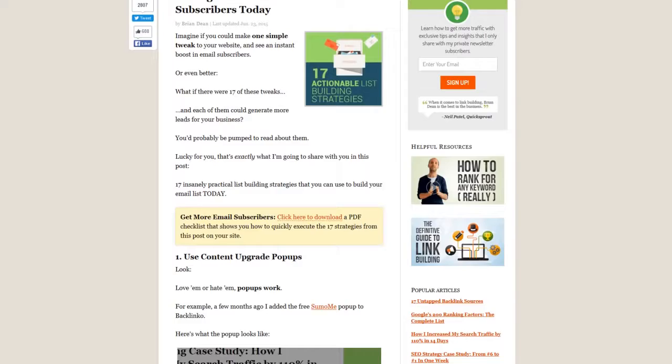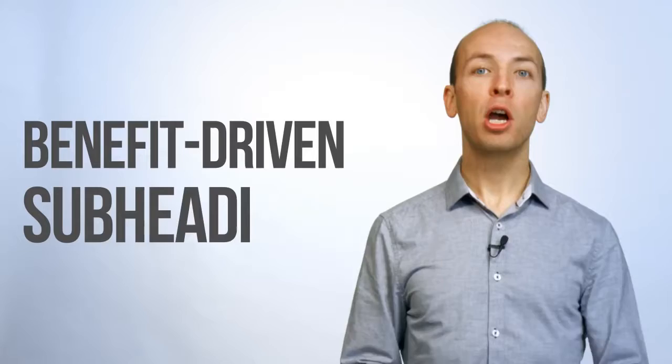For example, my post 17 Insanely Actionable List Building Strategies has an average time on page of over five minutes. The number one reason? Because the post contains lots and lots of subheadings. But not just any subheadings, benefit-driven subheadings. I'll explain.